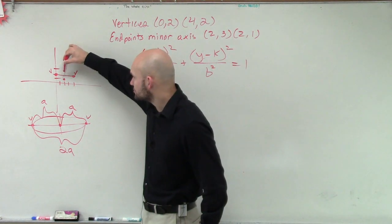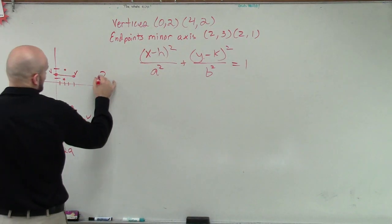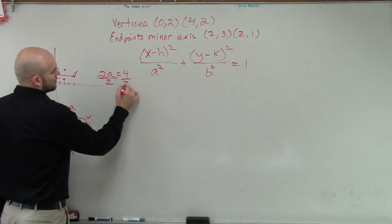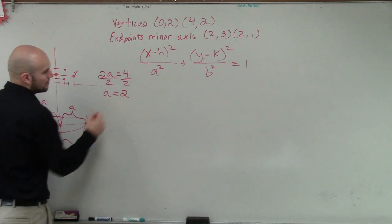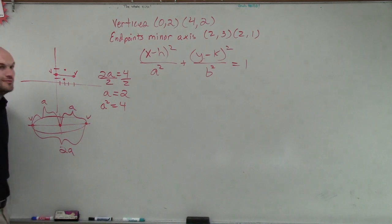Four. One, two, three, four. So, we could say two a is equal to four. So, therefore, a equals two. Right? And, therefore, we could say a squared equals four.